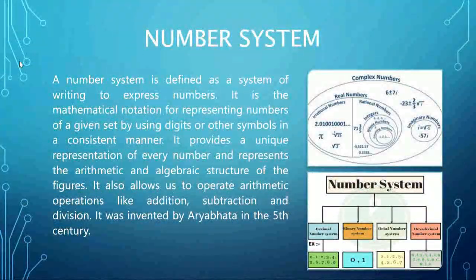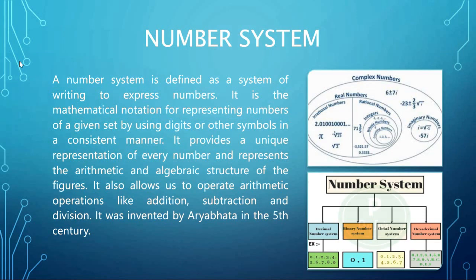A number system is defined as a system of writing to express numbers. It is the mathematical notation for representing numbers of a given set by using digits or other symbols in a consistent manner. It provides a unique representation of every number and represents the arithmetic and algebraic structure of the figures. It also allows us to perform arithmetic operations like addition, subtraction, and division. The number system was invented by Aryabhata in the fifth century.